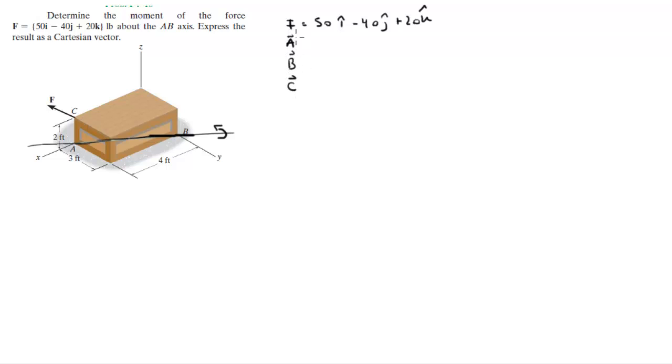So A is at 4 in the i plus 0 in the j plus 0 in the k. B is at 0 in the i plus 3 in the j plus 0 in the k. And C sits at 4 in the i plus 0 in the j plus 2 in the k.